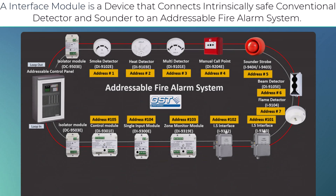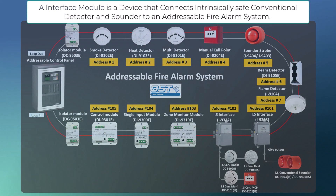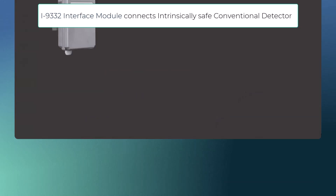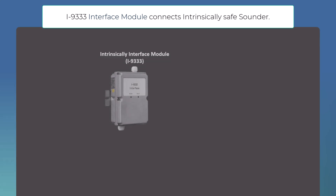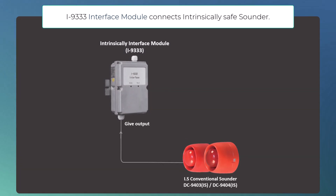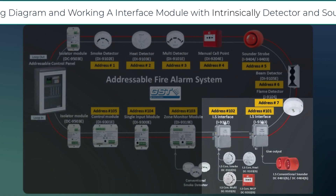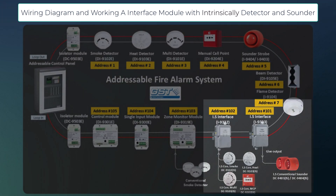An interface module is a device that connects intrinsically safe conventional detectors and sounders to an addressable fire alarm system. The I-9332 interface module connects intrinsically safe conventional detectors, and the I-9333 interface module connects intrinsically safe sounders. In this video, we show the wiring diagram and working of the GST zone monitor module with conventional detectors and the interface module with intrinsically safe detectors and sounders. Let's start.